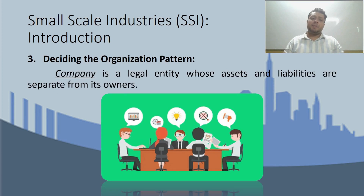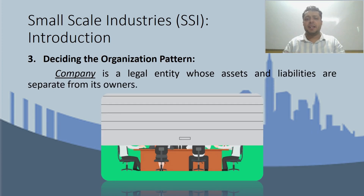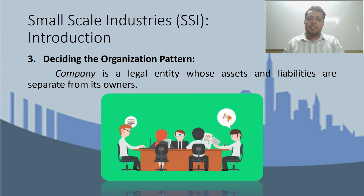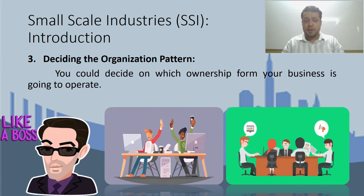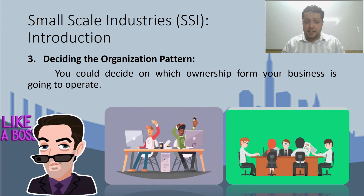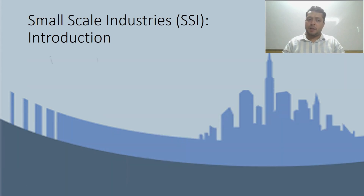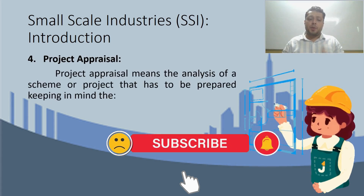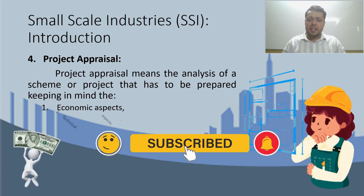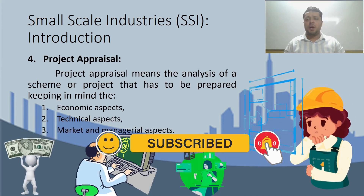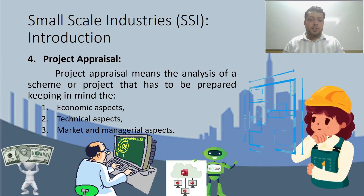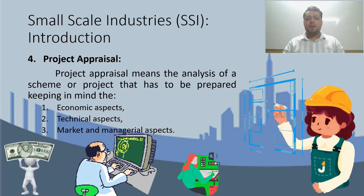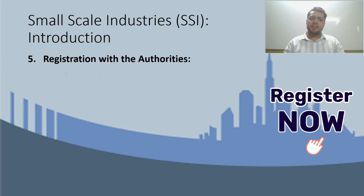In a partnership, partners combine capital and managerial skills for each other's benefit. The third organization pattern is a company, which is a separate legal entity whose assets and liabilities are separate from the owner's personal assets and liabilities. You need to decide which type of ownership — proprietary, partnership, or company — you want for your business. Next point is project appraisal, which means analyzing the scheme or project being prepared across three aspects: economic aspect, technical aspect, and market and managerial aspects.